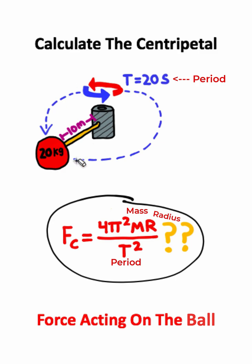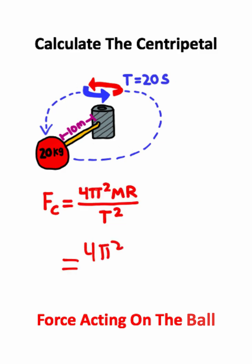We can use this for mechanical situations like this. We have 4π², and these are just constants. I'll multiply that by the mass of this ball, which is 20 kilograms. I'll multiply this by the radius of the circle, and I can divide this whole thing by the period squared.